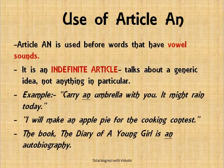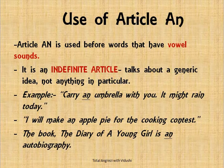Let's move on to the use of article AN. Article AN is used before words that have vowel sounds — remember our vowels: A, E, I, O, U. If the noun you're referring to starts with a vowel sound, then you use AN. It is also an indefinite article, just like A, because it talks about a generic idea and not something specific or particular. For example: 'Carry an umbrella with you, it might rain today.' The phonetic sound for umbrella starts with U, which is a vowel.